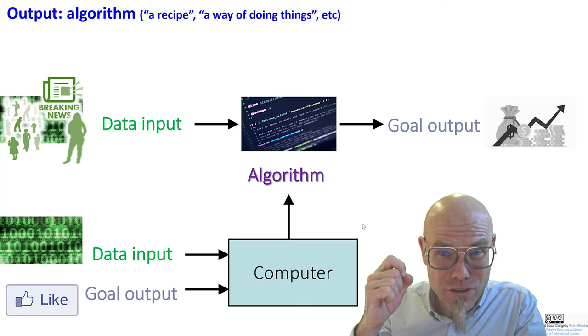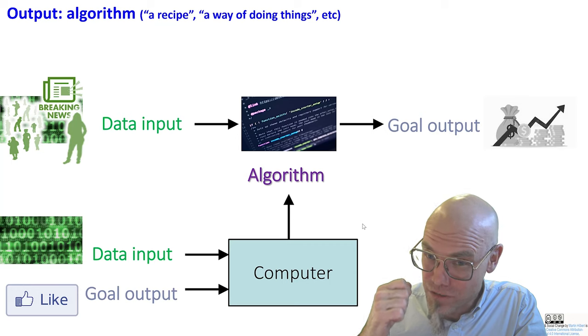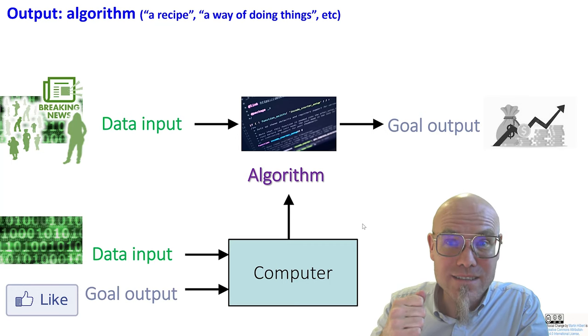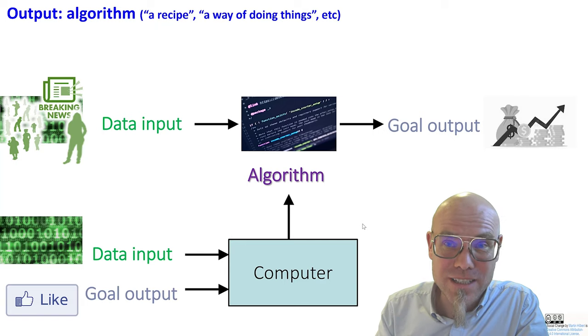And that is why machine learning has become the driving force of current social change. Machine learning looks for the best way, for new ways, for more efficient, for safer, for other ways of doing things. It computes the algorithm itself.